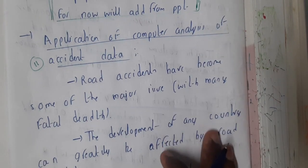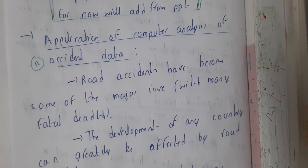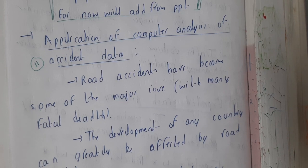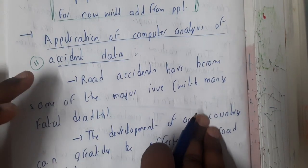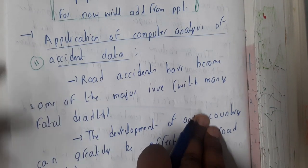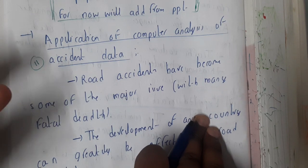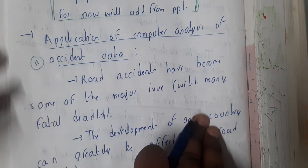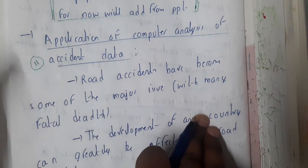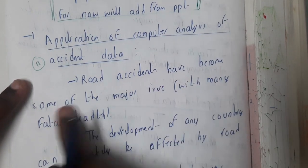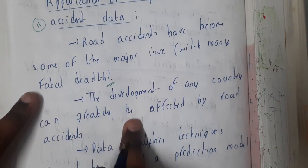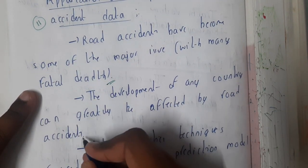In this lecture, we go through the applications of computer analysis of road accident data. Road accidents have become really common in recent years. Other than driver's negligence, they may be due to road conditions, which can be repaired. Based on the probability of accidents occurring, we can upgrade those places. Road accidents have become one of the major issues causing fatal deaths, and the development of any country can be affected by them.